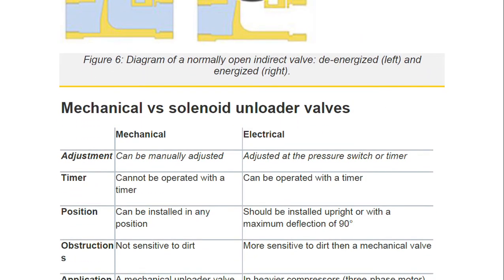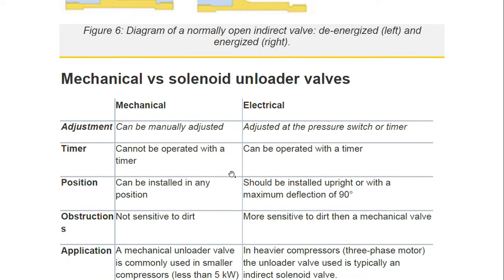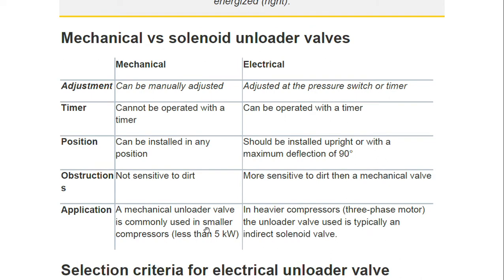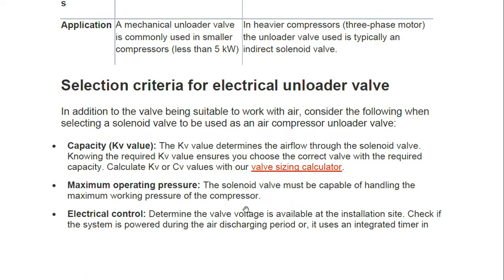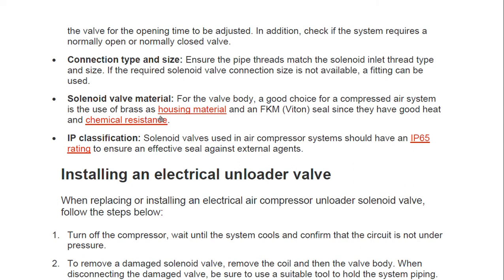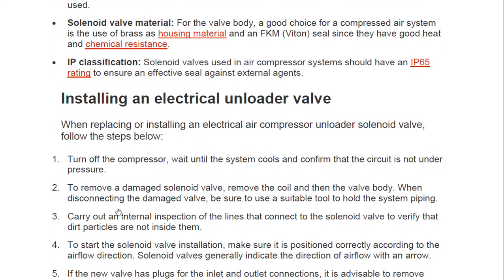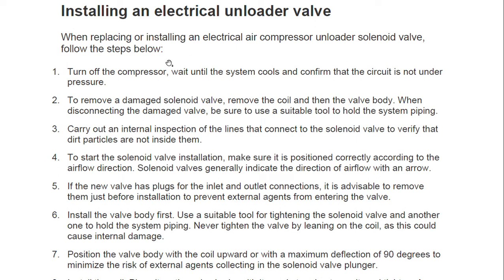Comparing mechanical versus solenoid unloader valves: the mechanical type can only be manually adjusted at the pressure switch or timer, cannot be operated with a timer, can be installed in any position, and is not sensitive to dirt. The solenoid type can be operated with a timer, should be installed upright or with a maximum deflection of 90 degrees, and is more sensitive to dirt. Mechanical unloader valves are commonly used in smaller compressors under 5 kW, while heavier three-phase motor compressors typically use an indirect solenoid valve. Selection criteria include capacity, maximum operating pressure, electrical control, connection type and size, solenoid valve material, and IP classification such as IP65.